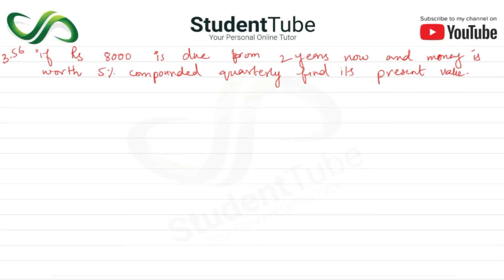due from two years now and money is worth 5 percent compounded quarterly, find its present value. So PV is